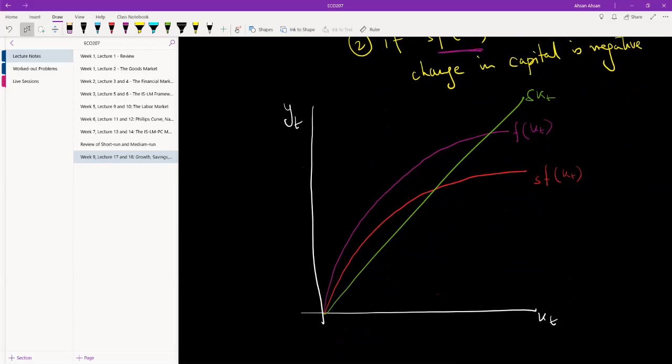Now, the question is, what is the equilibrium level? Let's not go to equilibrium already. Let's start small. Suppose we are at this point. Okay. This is how much capital we have in the economy. Capital per worker.